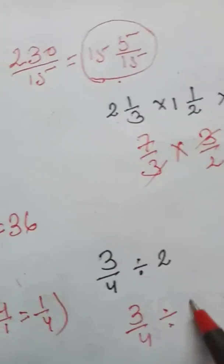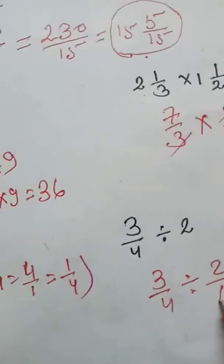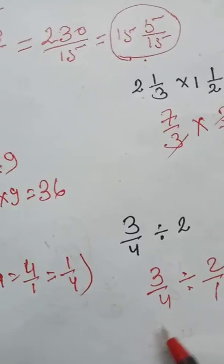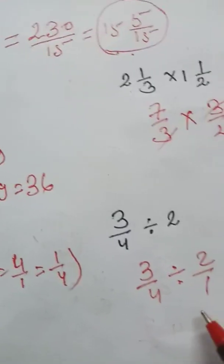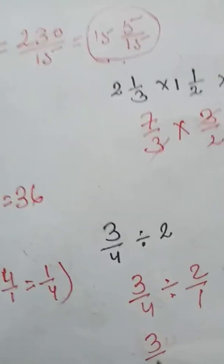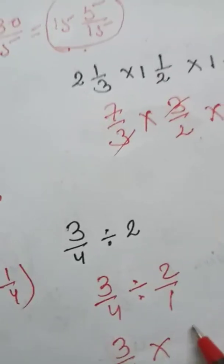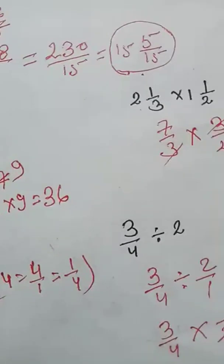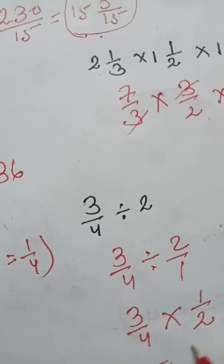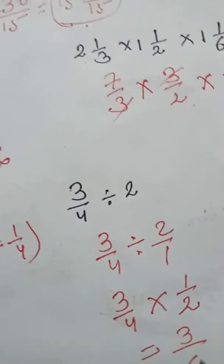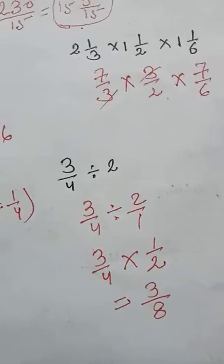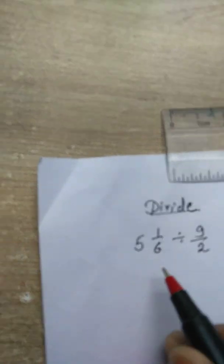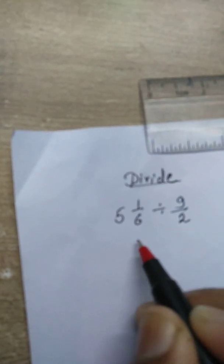Divide 3 upon 4 divided by 2 upon 1: left side stays as it is, and right side just take the reciprocal. So 3 upon 4 multiply 1 upon 2 gives 3 upon 8. That is the final answer.